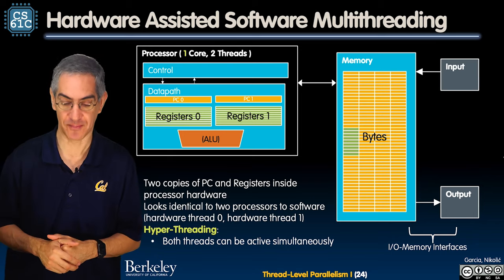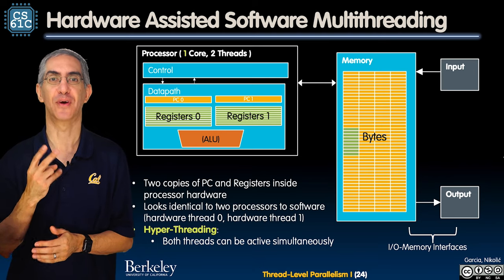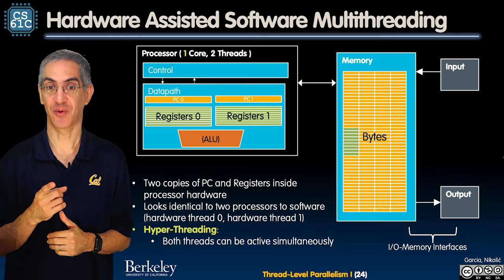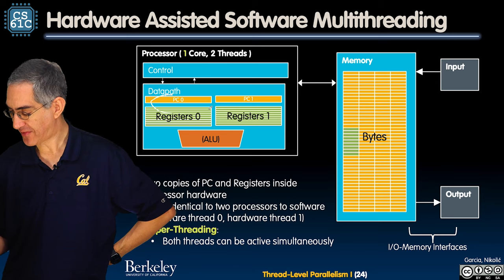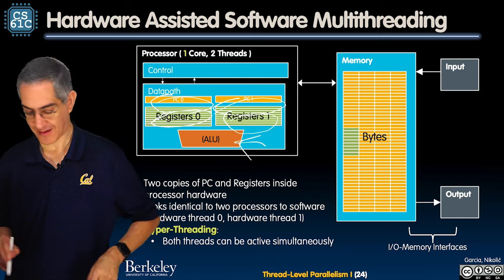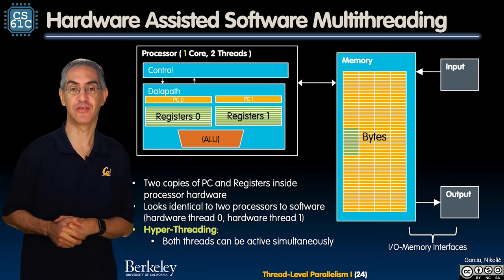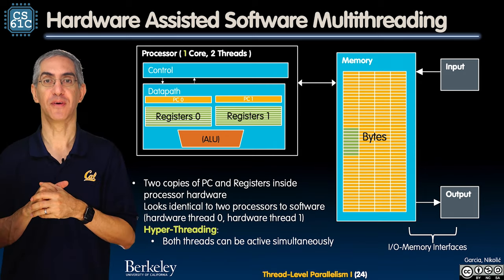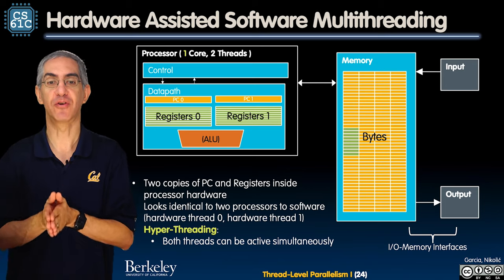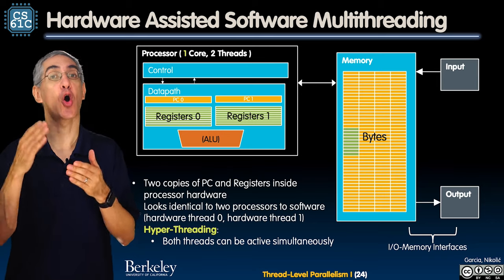Here's the big idea — a really clever idea. You've got one core. Two threads, two hardware threads in one core. How would you make this happen? You could have two different PCs, two different PCs, two separate register sets. Transistors are cheap, so I have two copies of my PC and registers inside. From the software point of view, this looks like two different hardware threads, but it's one core.